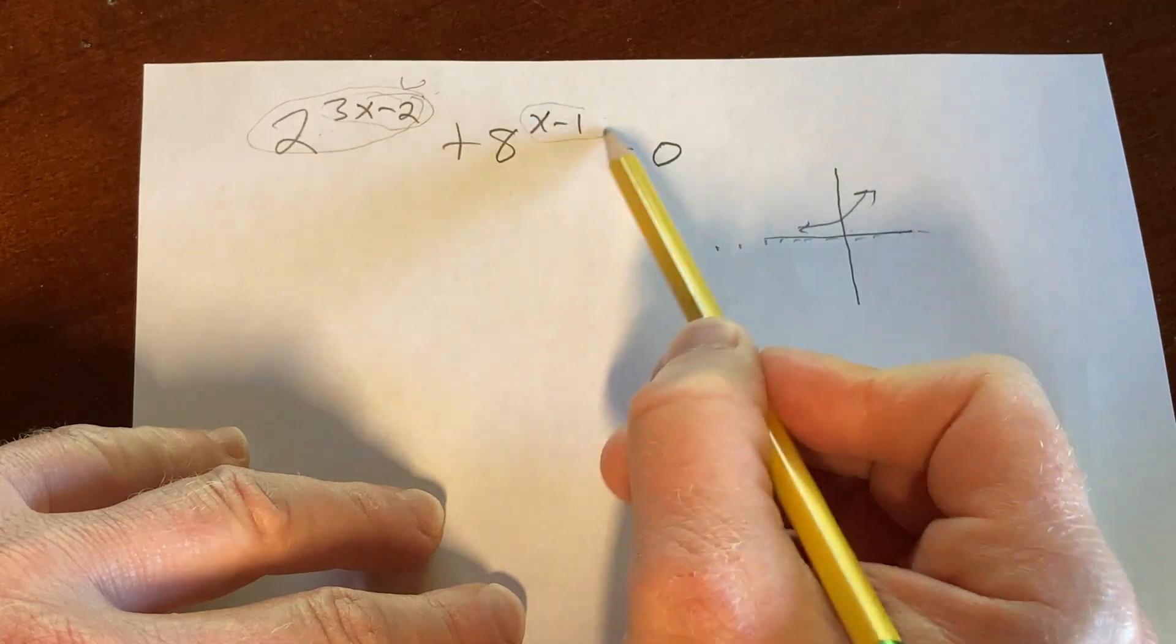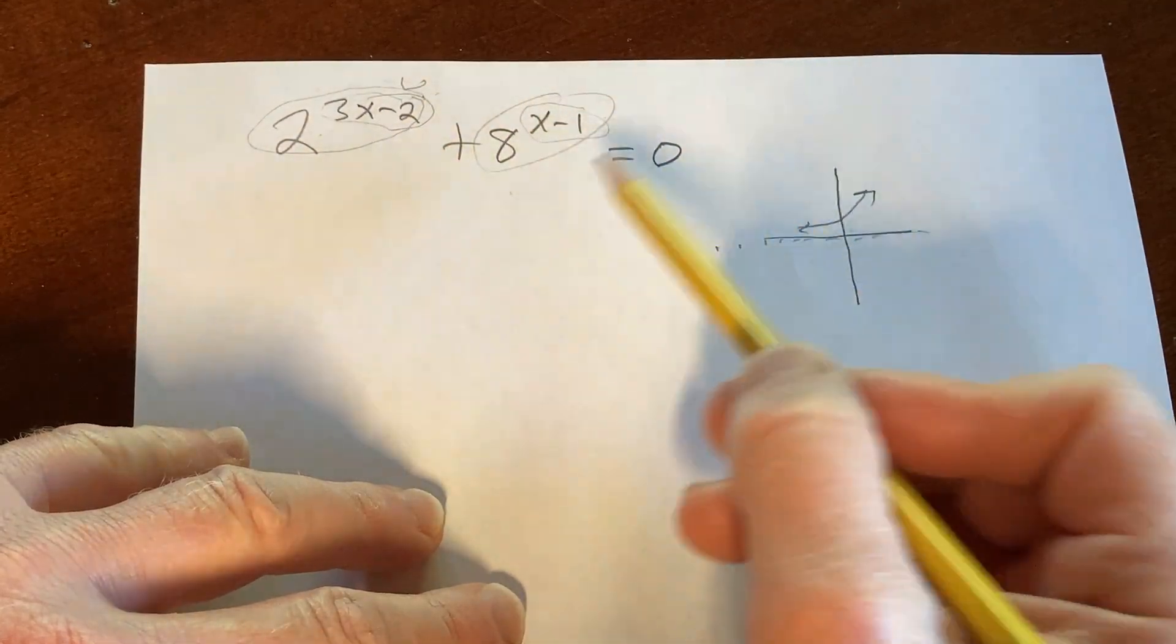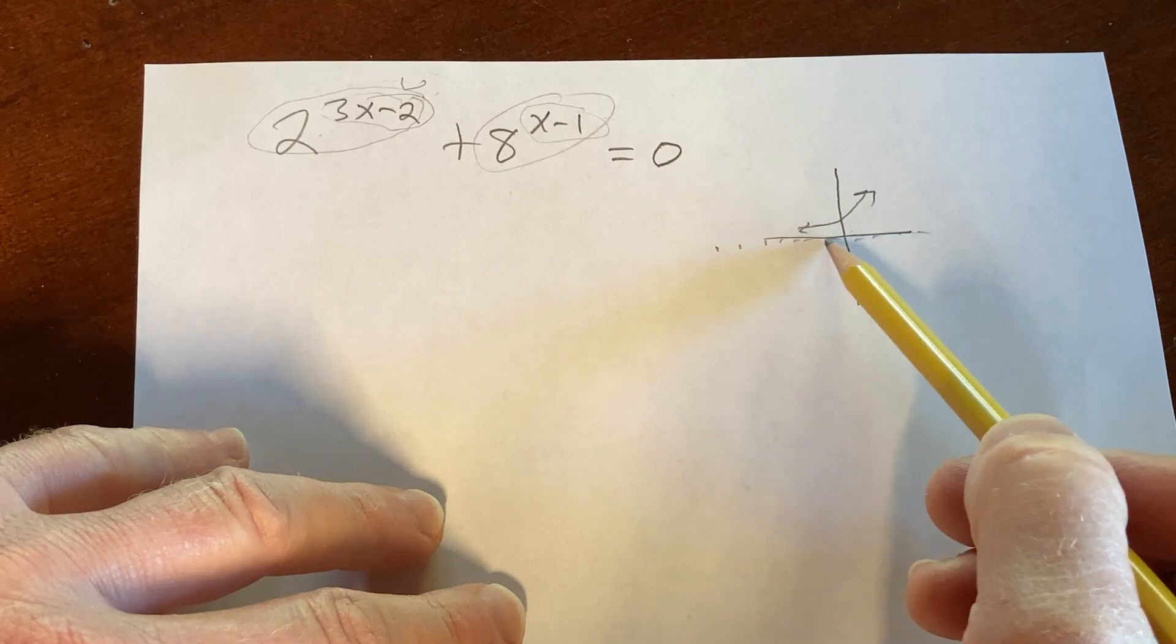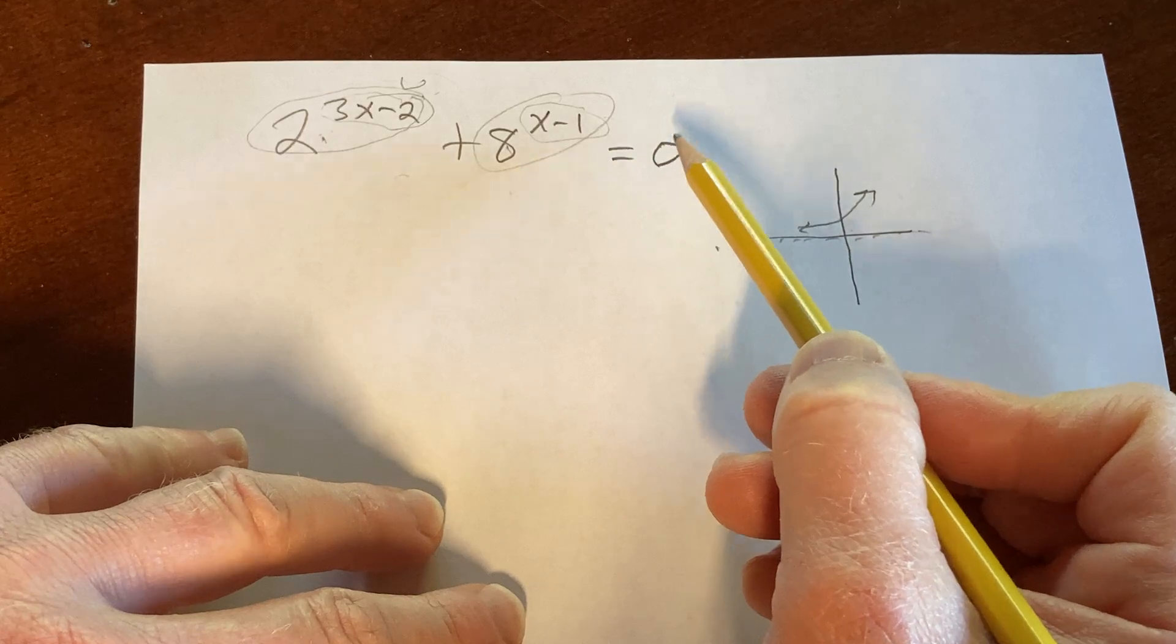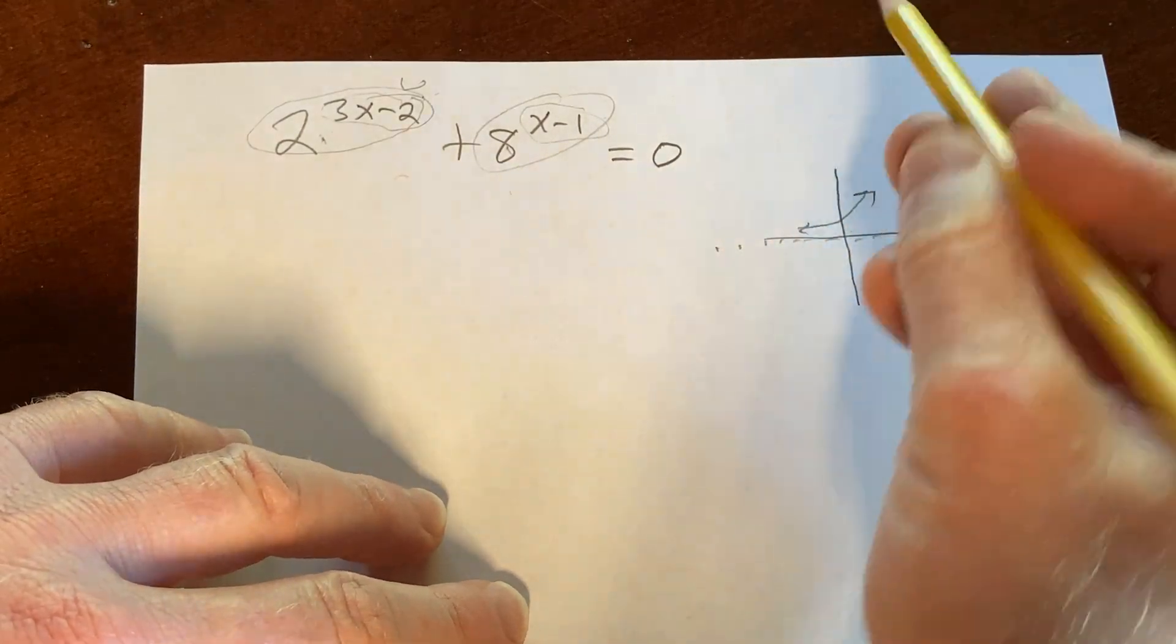The same thing here, this is also going to be positive. 8 to the x minus 1 is positive. The graph looks roughly the same, except it grows faster. So you have a positive number plus a positive number, so there's no way that that can equal 0. So this has no solution.